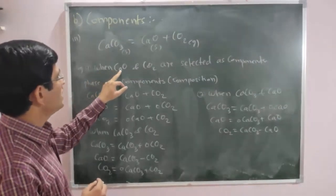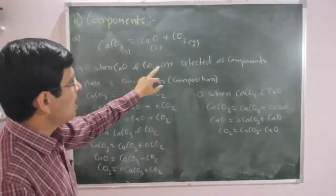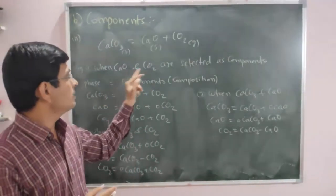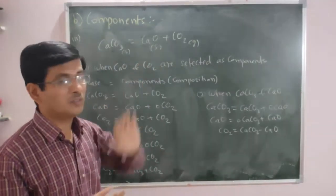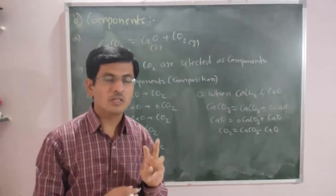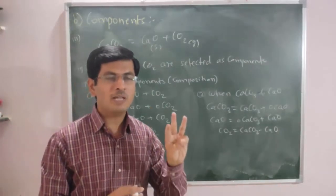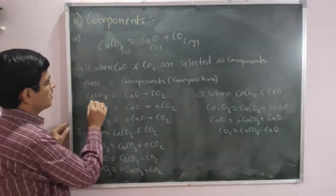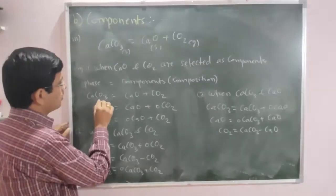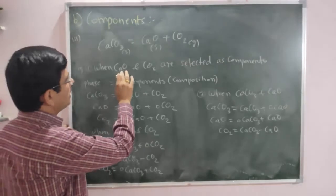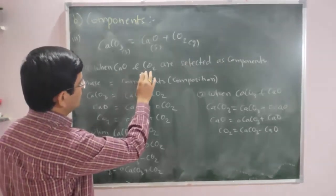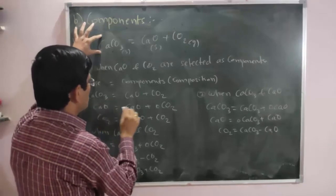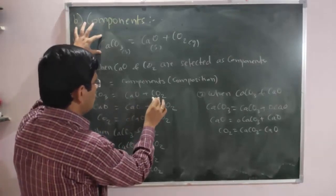When CaO and CO2 are selected as the components, we consider two constituents. The first phase is CaCO3, and its composition can be expressed using CaO and CO2 by the chemical equation: CaCO3 = CaO + CO2.